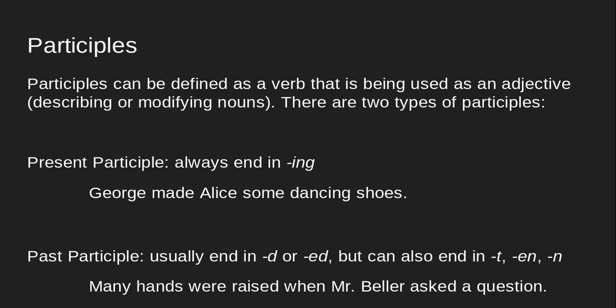If you don't have a present participle, we then have a past participle. This usually ends in D or ED, but there are a couple of irregular ones that can end in T, EN, or N. For example, 'burnt toast' is an example of an irregular past participle — 'burn' is still a verb, but instead of 'burned toast,' we say 'burnt toast.'